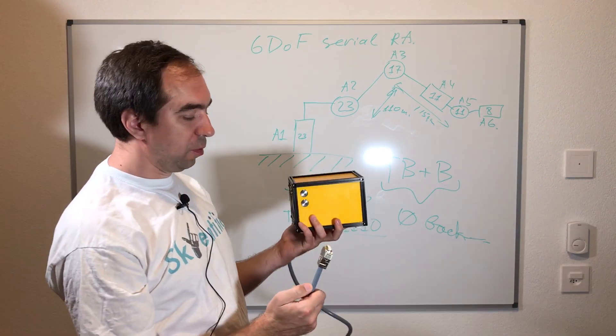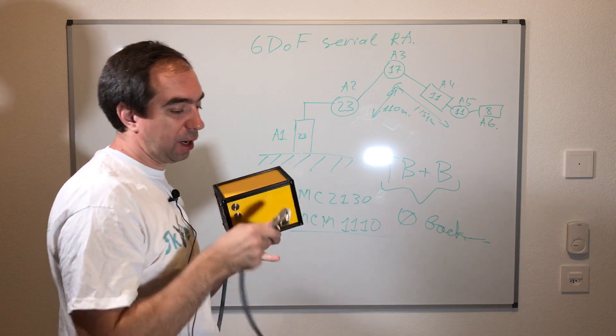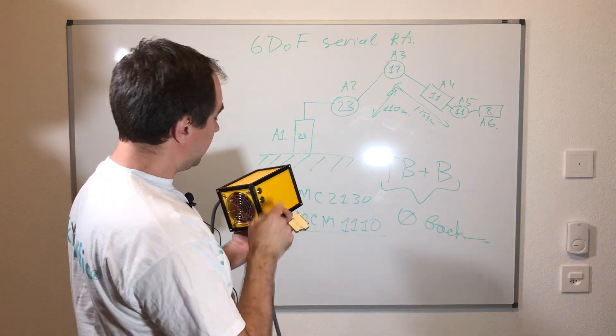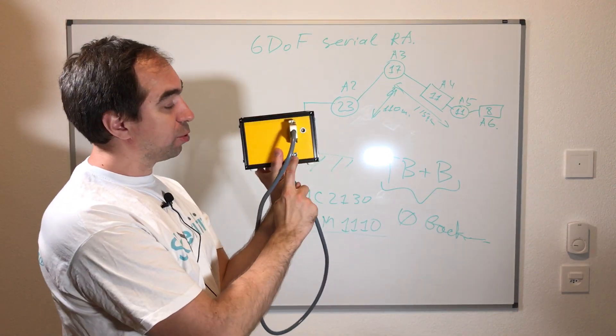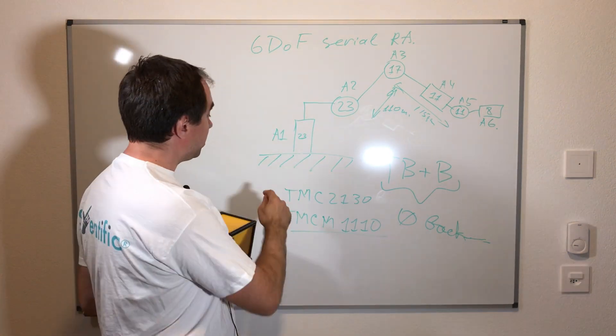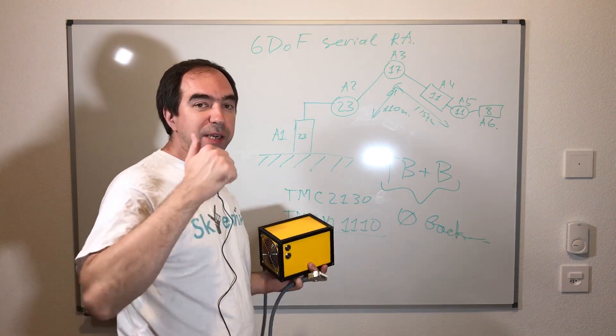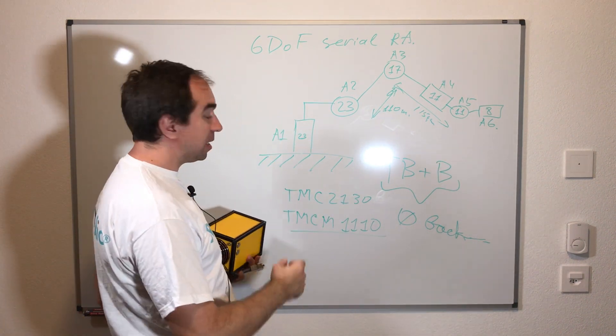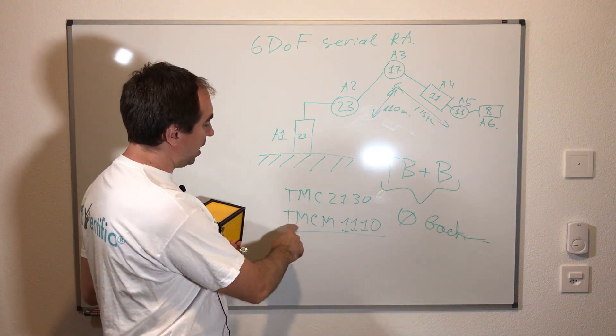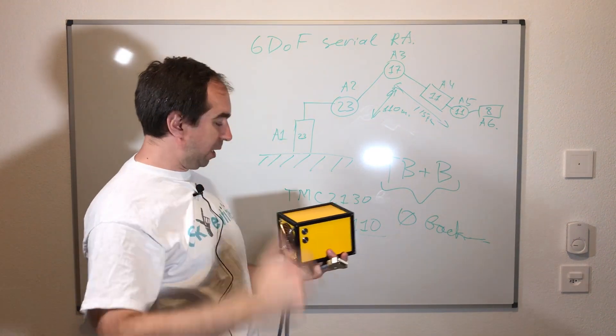This is the control box, so this cable goes to the robotic arm. Inside this control box there is an Arduino Mega, which can be controlled through this USB port, and there are 6 stepper drivers. Three stepper drivers are TMC 2130 for the axis 4, 5, and 6, and three stepper drivers are TMC M1110 for the axis 1, 2, and 3.